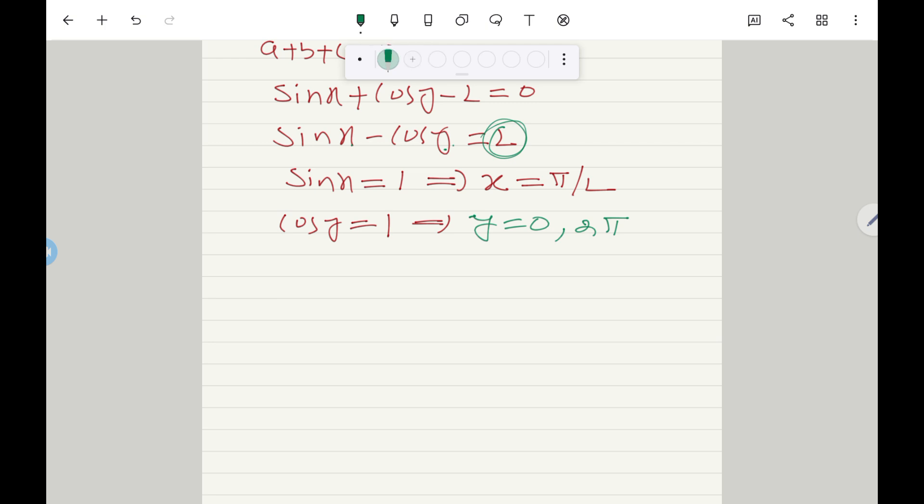Sometimes somebody will ask you, what is the maximum value of x plus y? Maximum value of x plus y means here, maximum value of x is π/2 and maximum value of y is 2π. Add them for maximum x + y. You can say max(x + y) = 2π + π/2 = 5π/2. Okay.